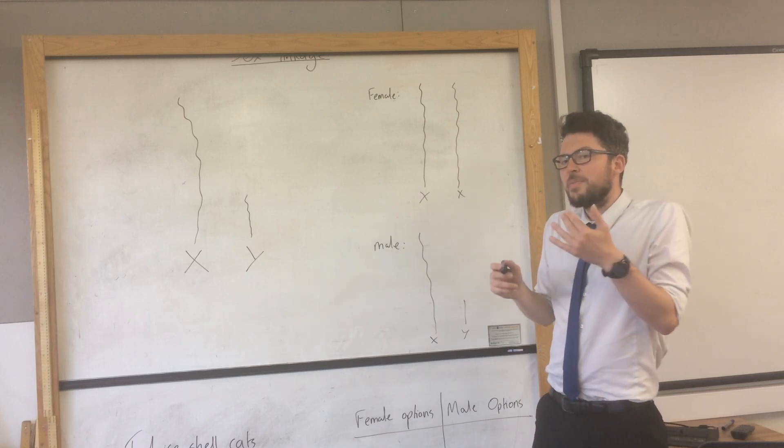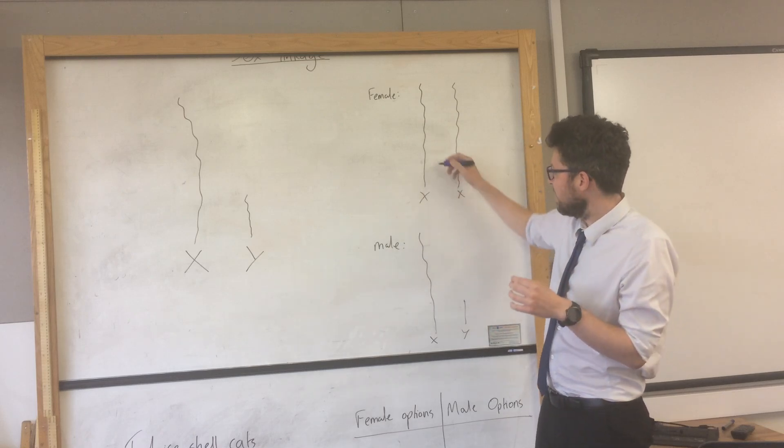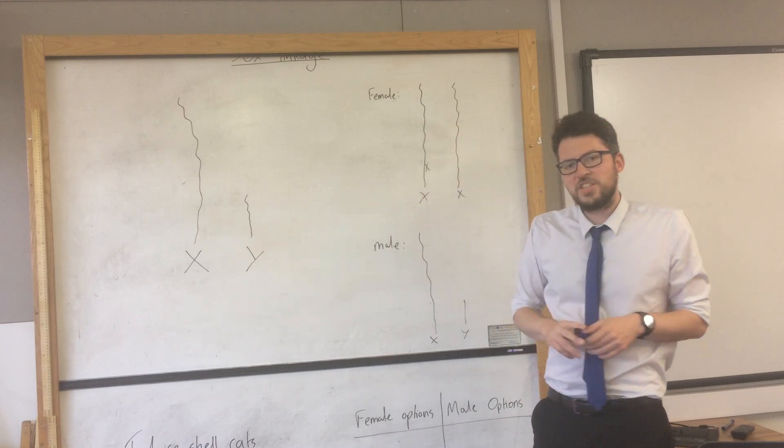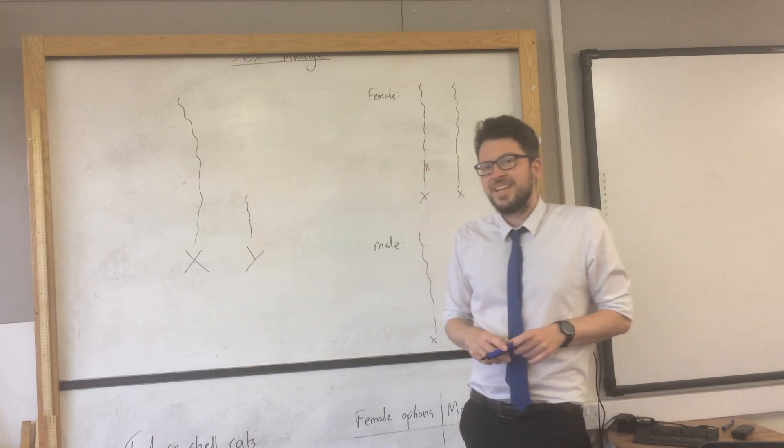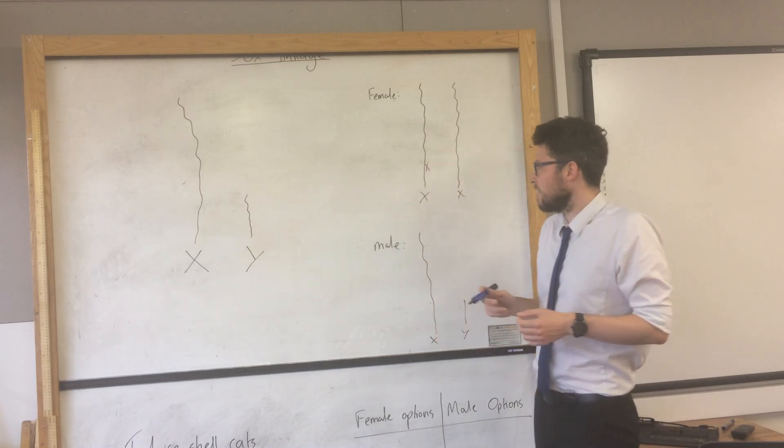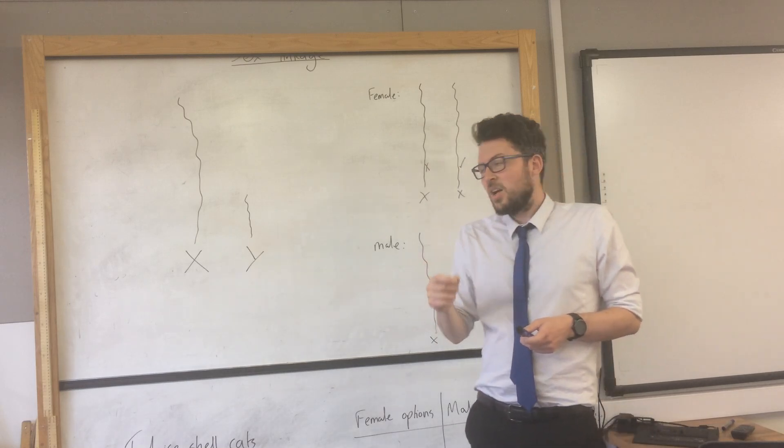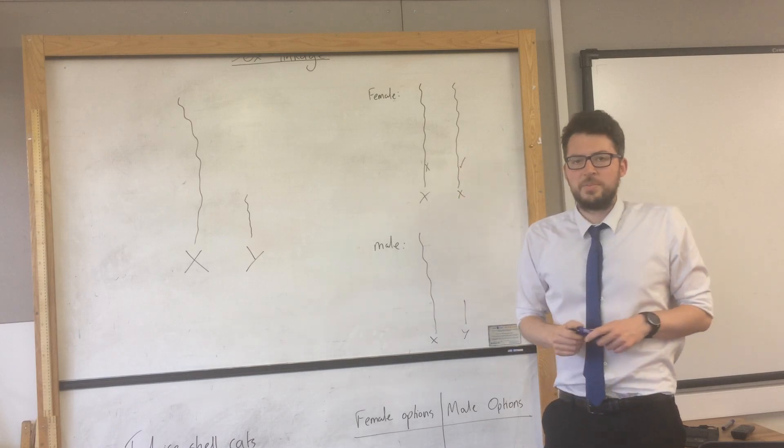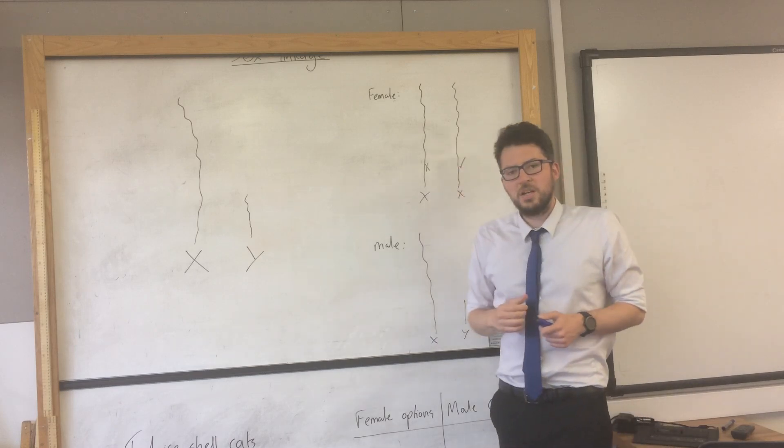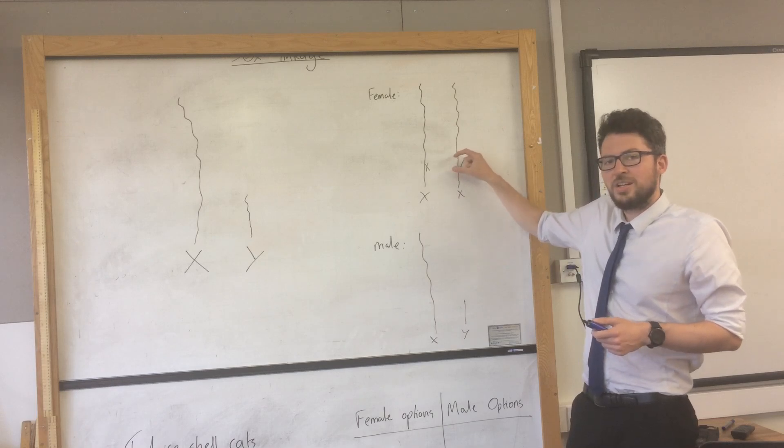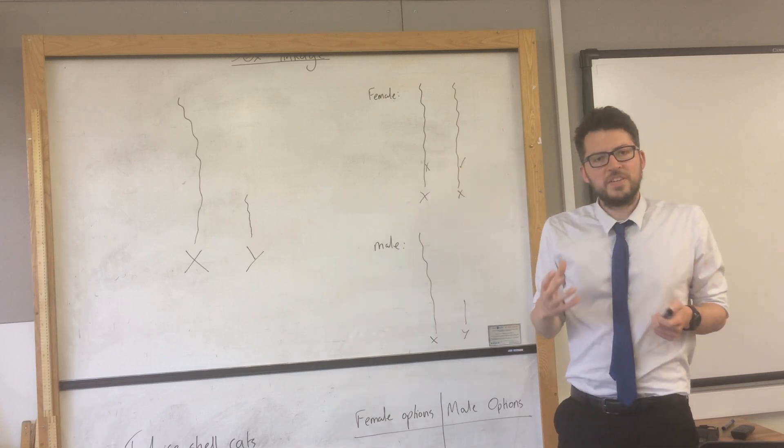So if a woman, a female, had a faulty colour vision gene on one of their X chromosomes, the chances are that they'll have a functional one for the same gene on their other X chromosome. So that means that they won't be colour blind because they still have a functional allele for colour vision.